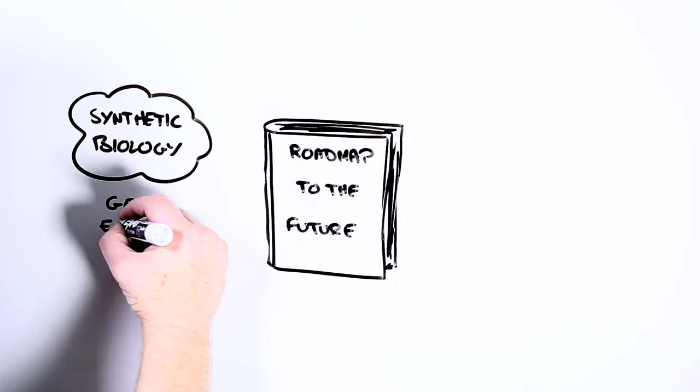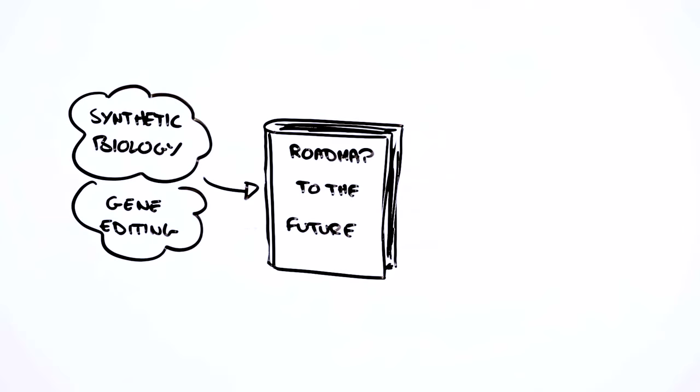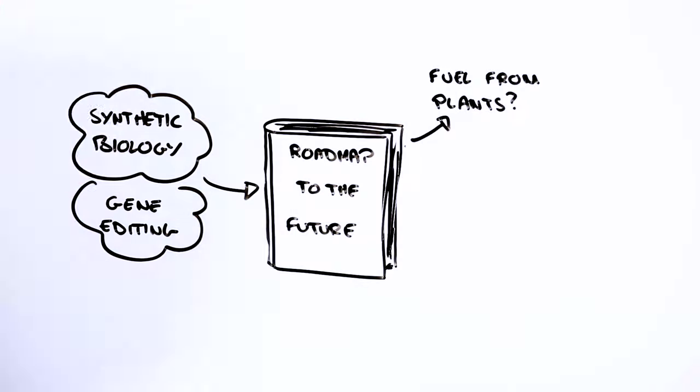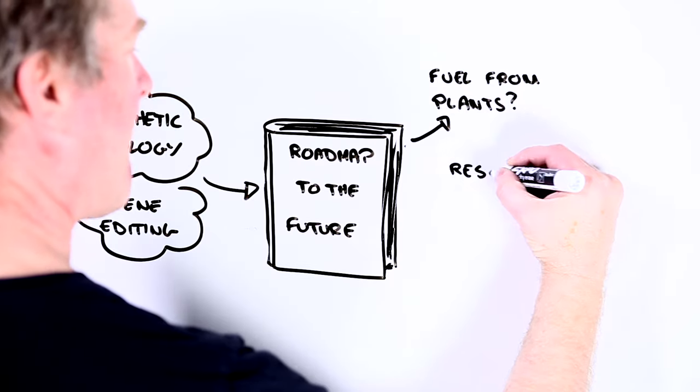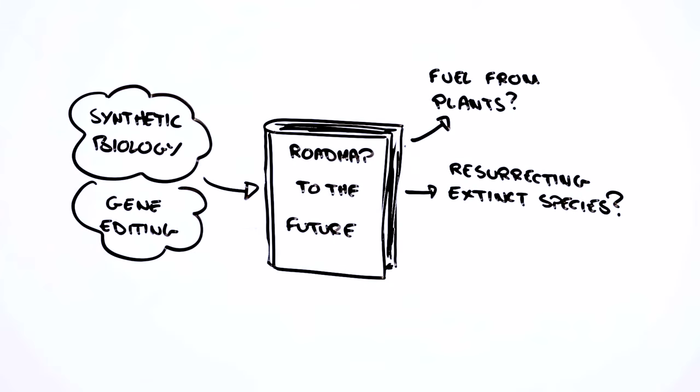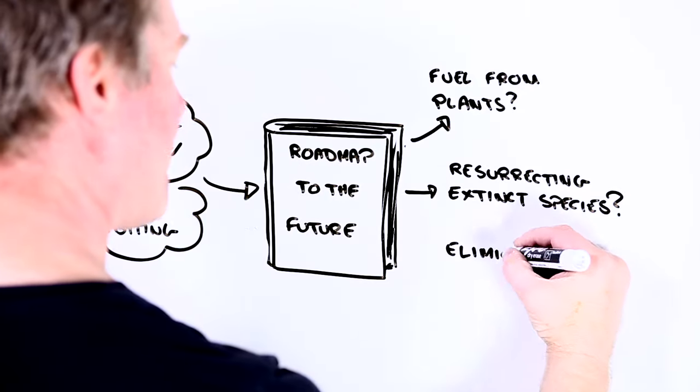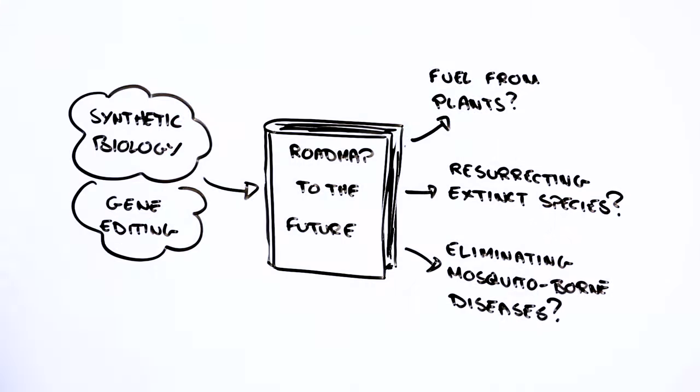Take synthetic biology and gene editing, for instance. These are technologies that could help us to get places we might want to be. For example, by making it easier to convert plants into fuel. Or even to resurrect extinct species like the woolly mammoth, and yes, some people really do want to do this. Or even to eliminate mosquitoes that carry devastating diseases like dengue and malaria.